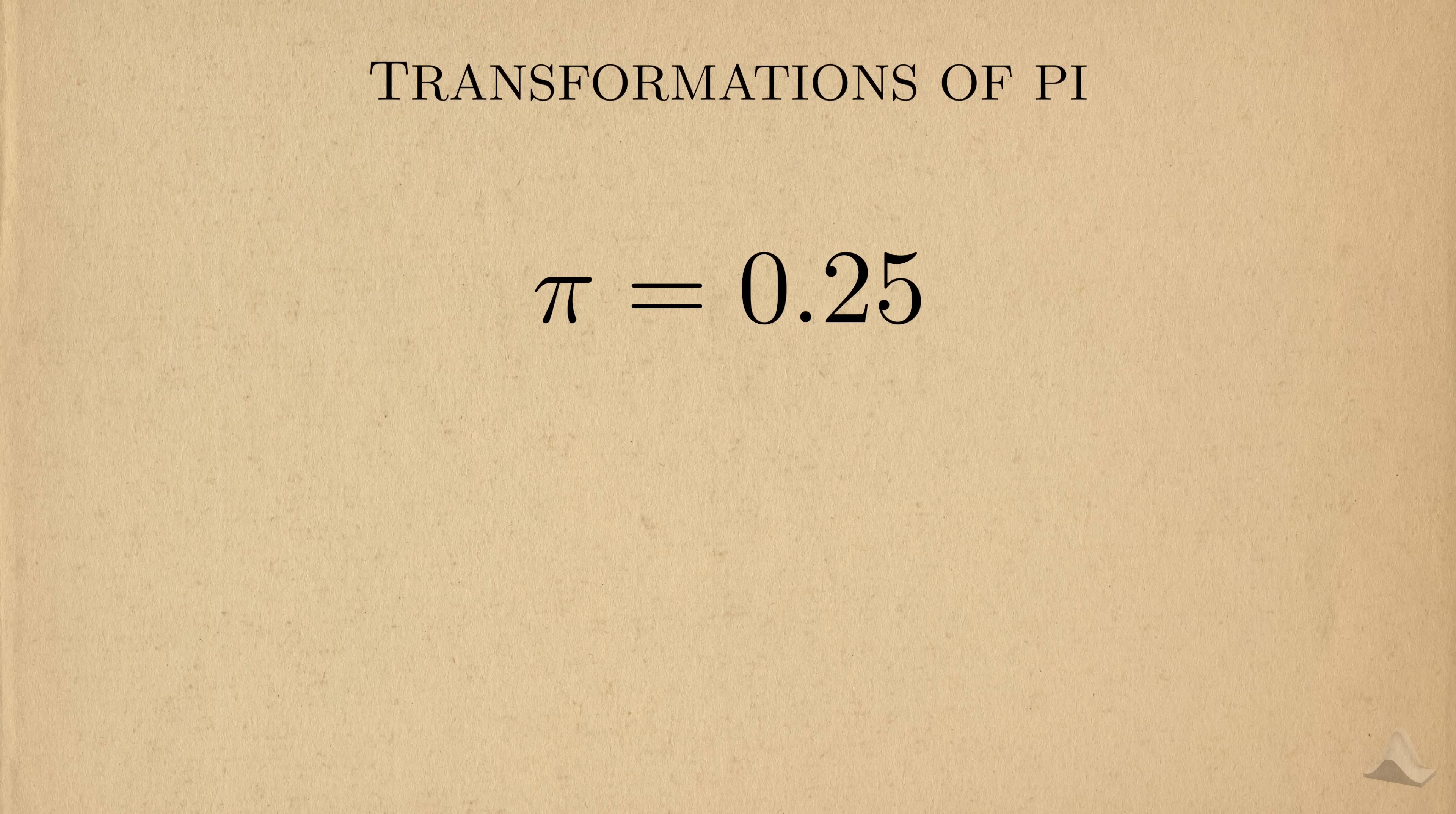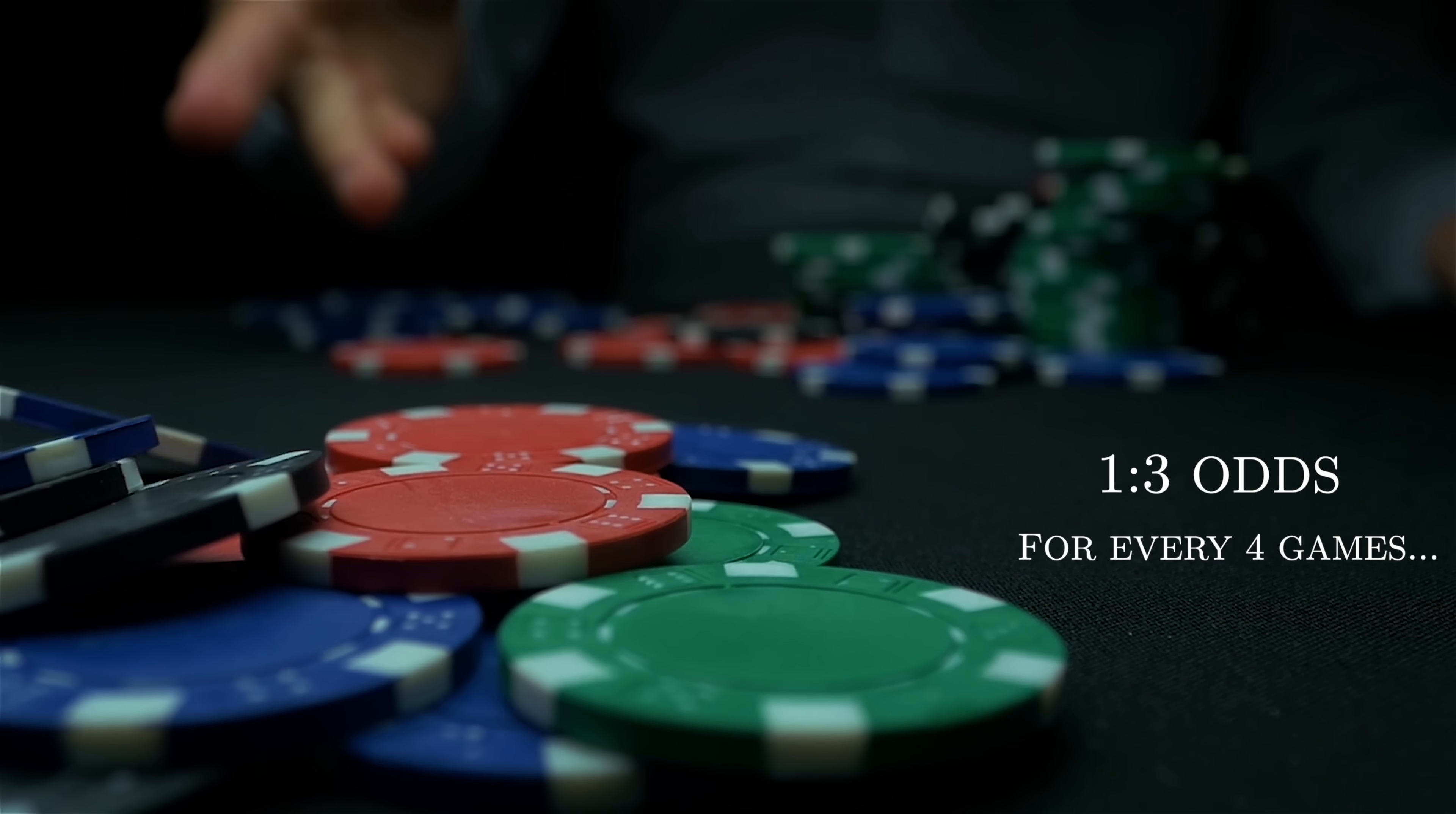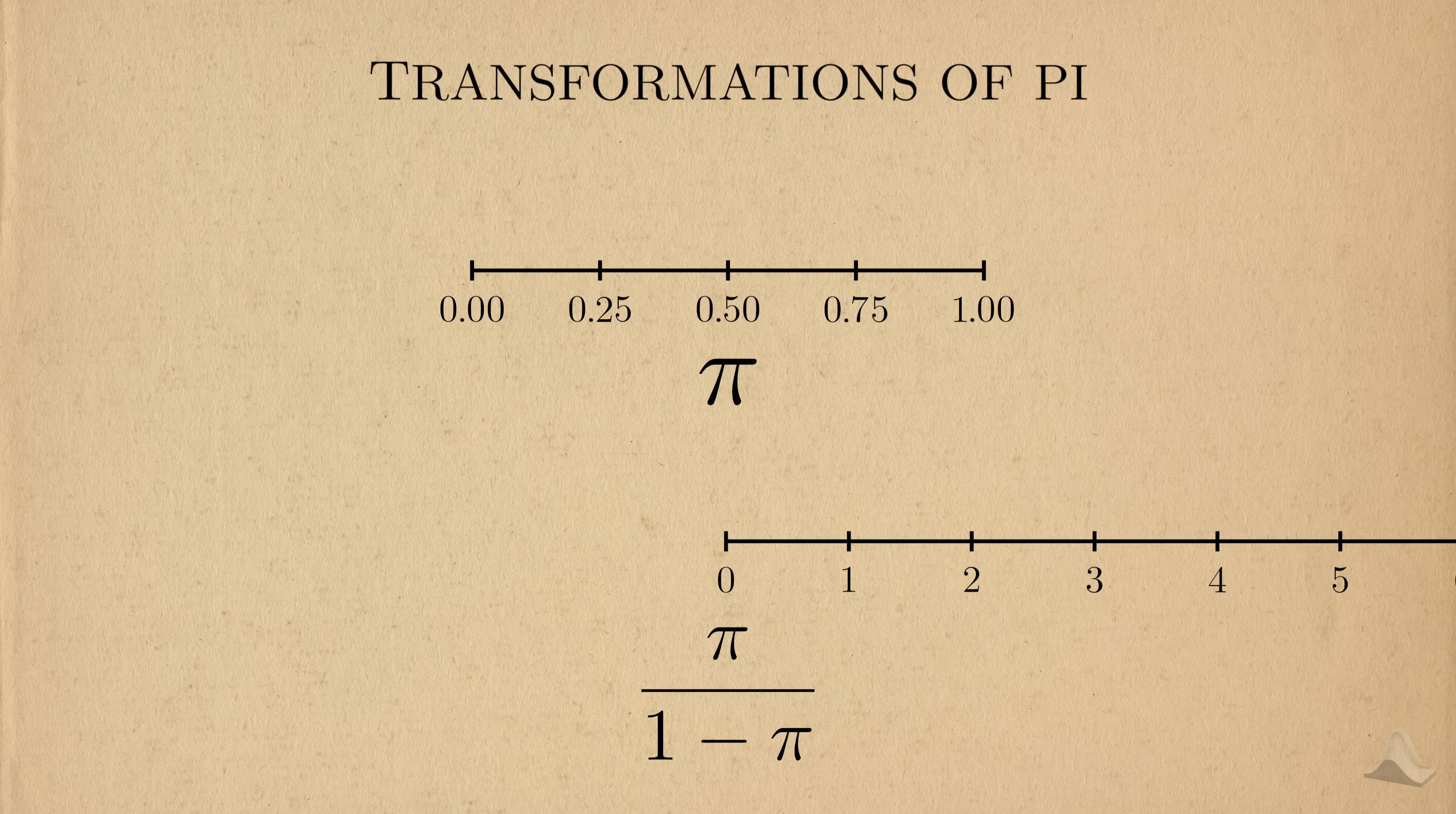An event that will happen with 25% probability, by definition has 1 to 3 odds, or 3 to 1 against. In gambling terms, for every 4 games you play, the odds say that you'll win once and lose the other 3. Pi can only be between 0 and 1, but odds can range between 0 and positive infinity.